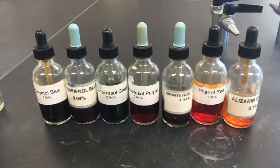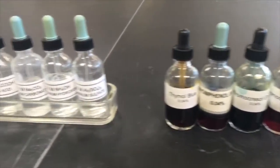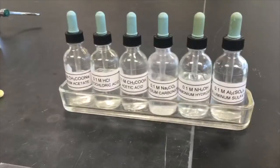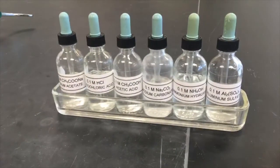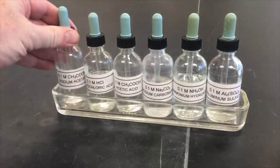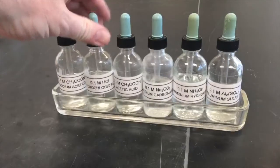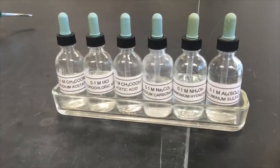Over here, we'll just move over a little bit. Here are the known solutions that will be measuring the pH of using the indicator. So we have some sodium acetate and hydrochloric acid and you'll see all those as we go along.